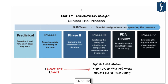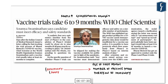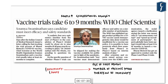Two articles today discuss ICMR's announcement calling for fast-tracking the trials process of Bharat Biotech's COVID-19 vaccine, Covaxin. The article on page one is a statement by Soumya Swaminathan, Chief Scientist of the World Health Organization. She said that candidate vaccines across the world must meet efficacy and safety standards. She stated that even during a pandemic, a realistic timeline from Phase 1 to completion of Phase 3 trials should be at least six to nine months.